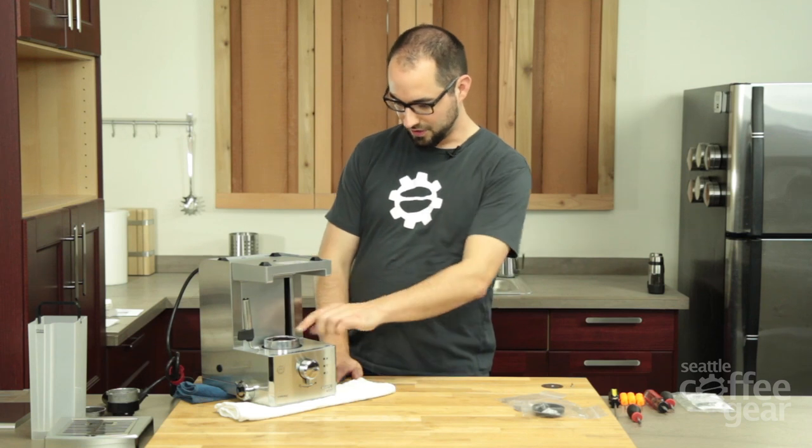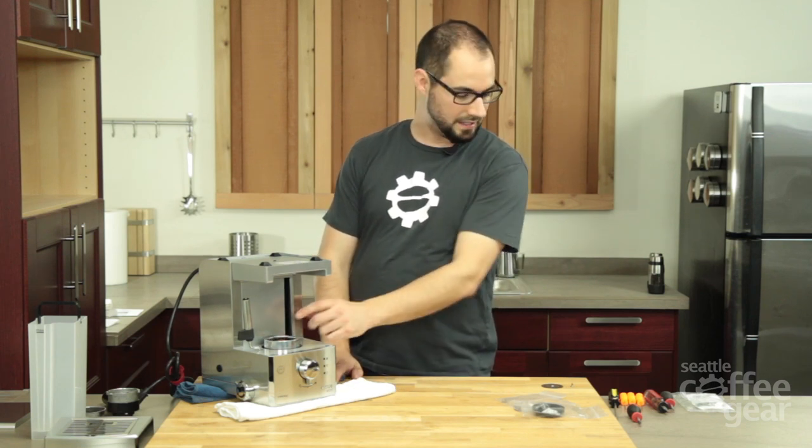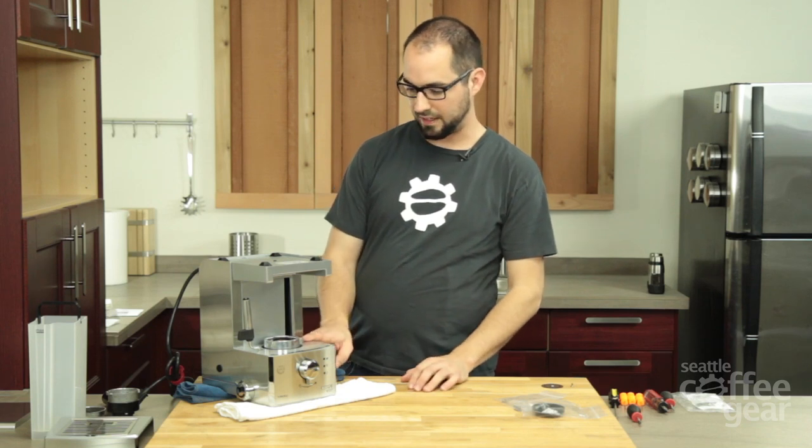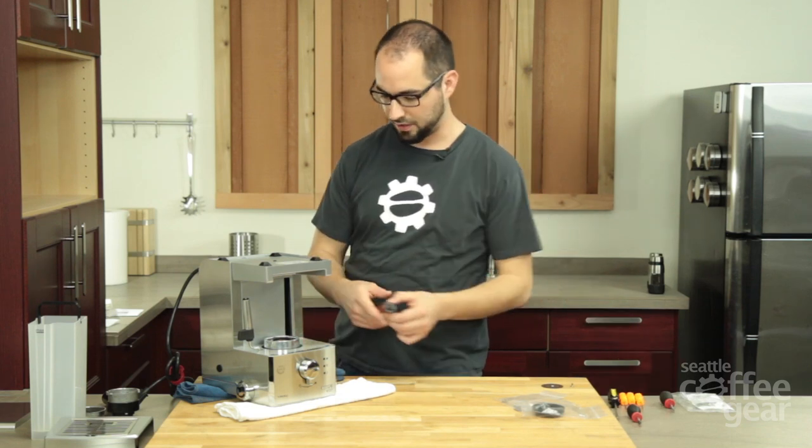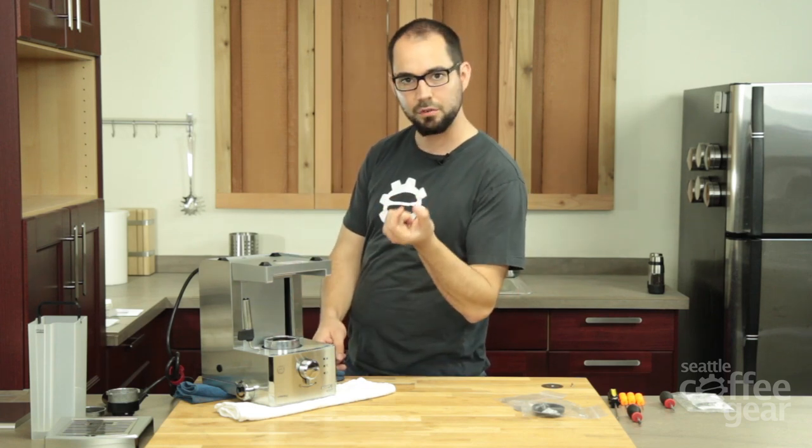Now that our screen is off, we have this boiler bushing that needs to come out. And you're going to need a flathead screwdriver to do that. We have this tool here that's really wide, but essentially all you want is the widest flathead screwdriver you can find.